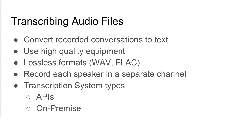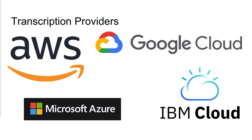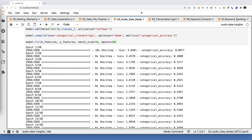Let's change gears and talk about transcribing audio files. When transcribing, you want to make sure audio files are clean, transcriptions are in separate files per speaker, you're using lossless formats, and working with high quality equipment as best you can. There are different types of systems — APIs and on-premise. All the big players have transcription options: AWS, Google Cloud, Azure, IBM. They all have APIs to do transcription.